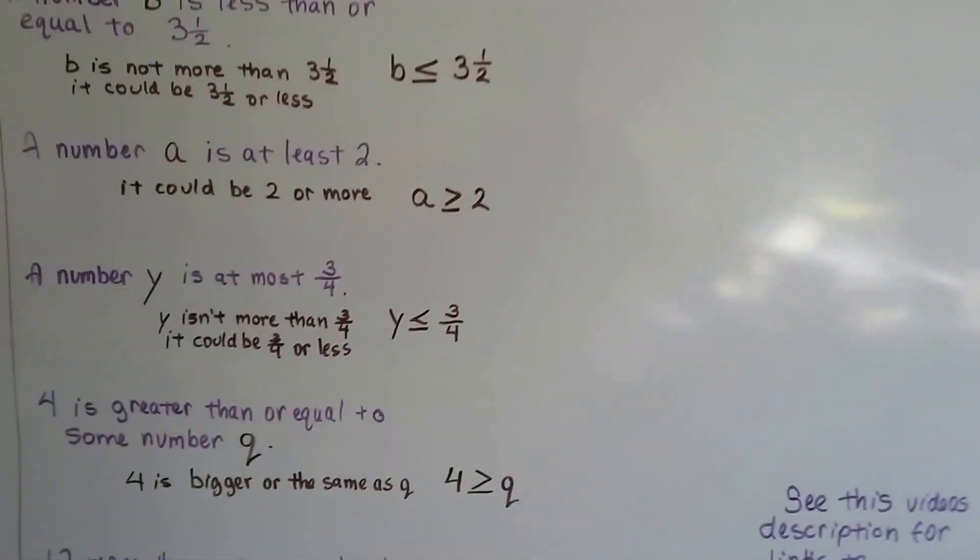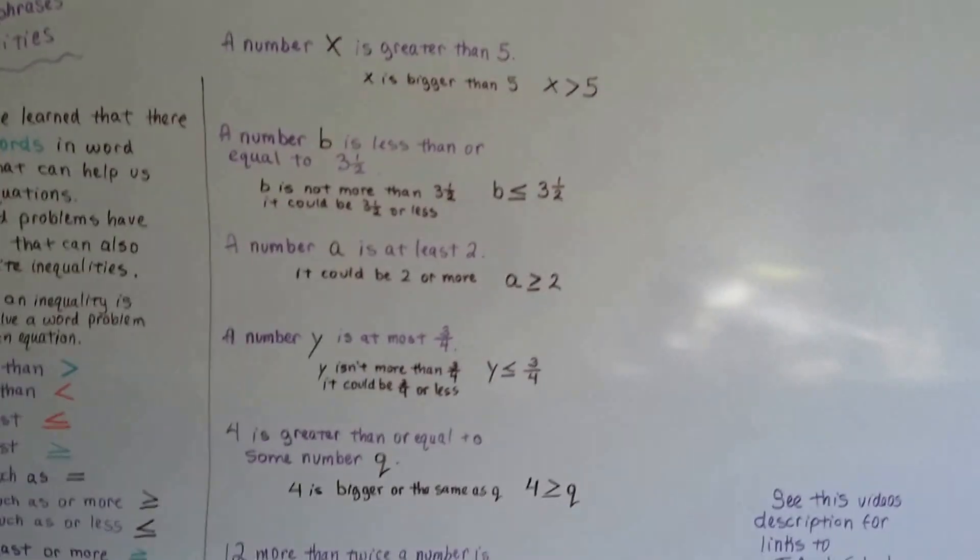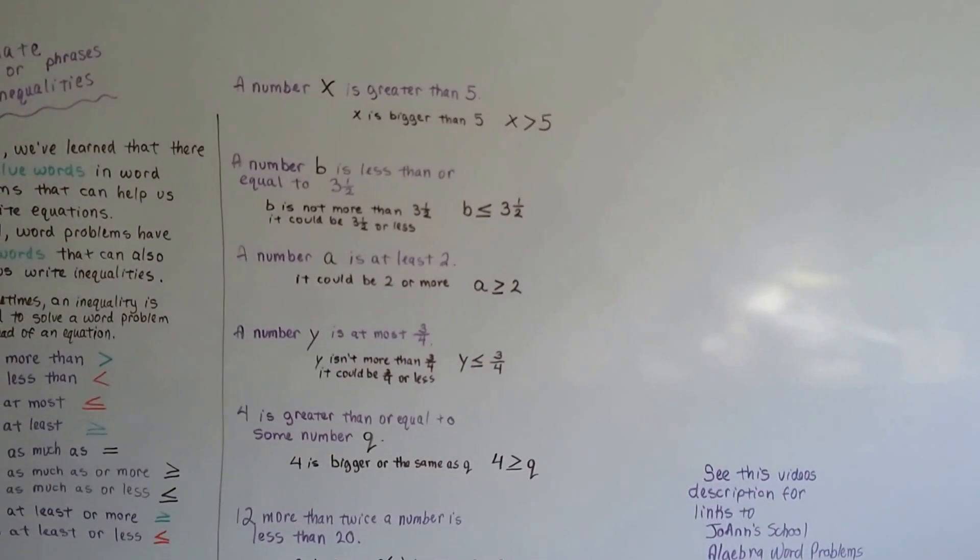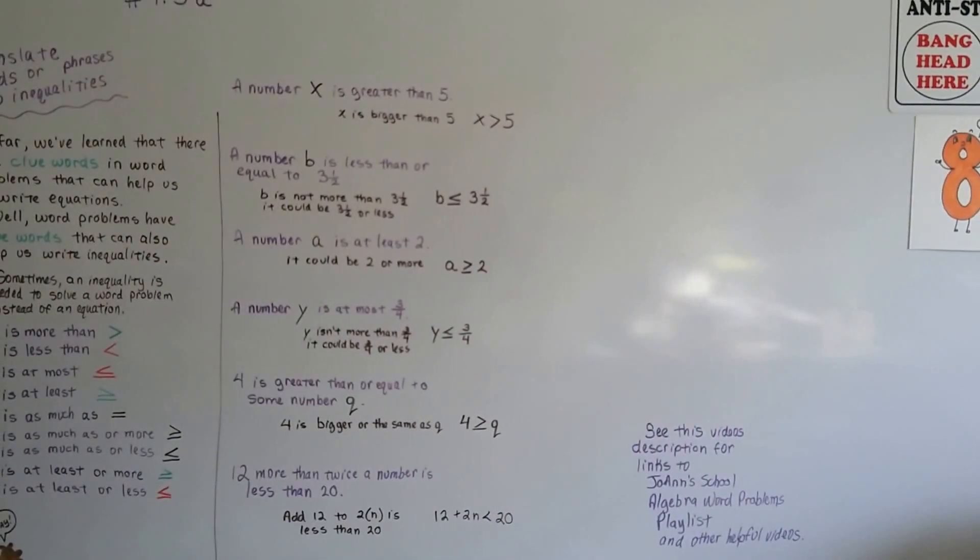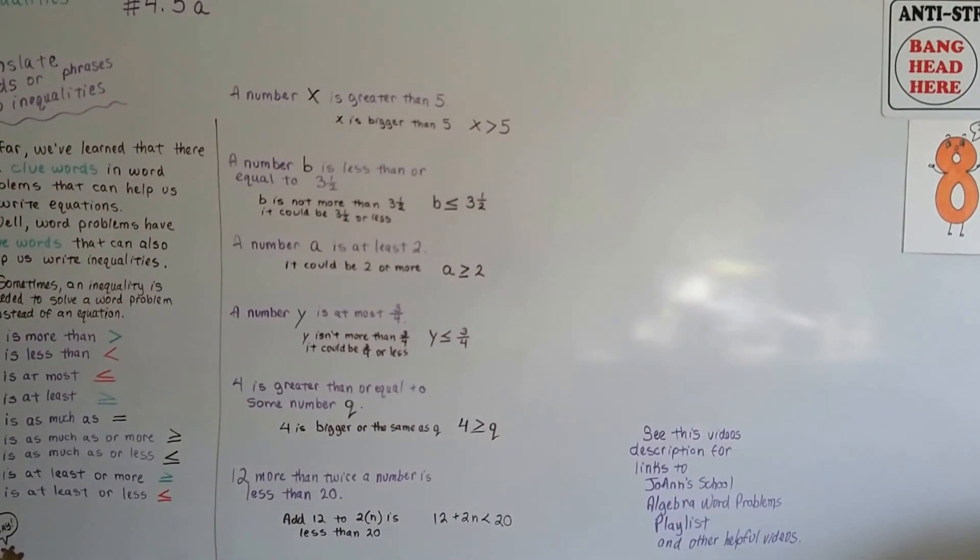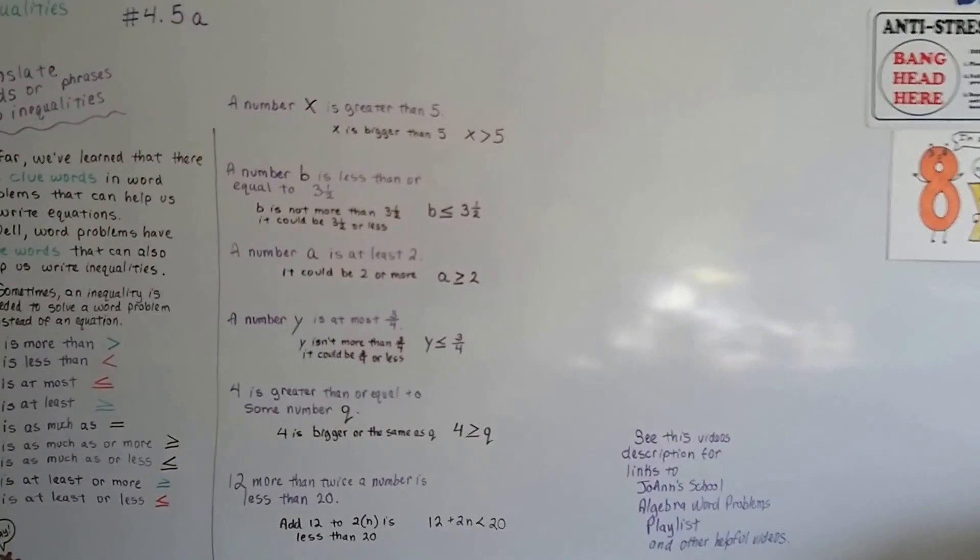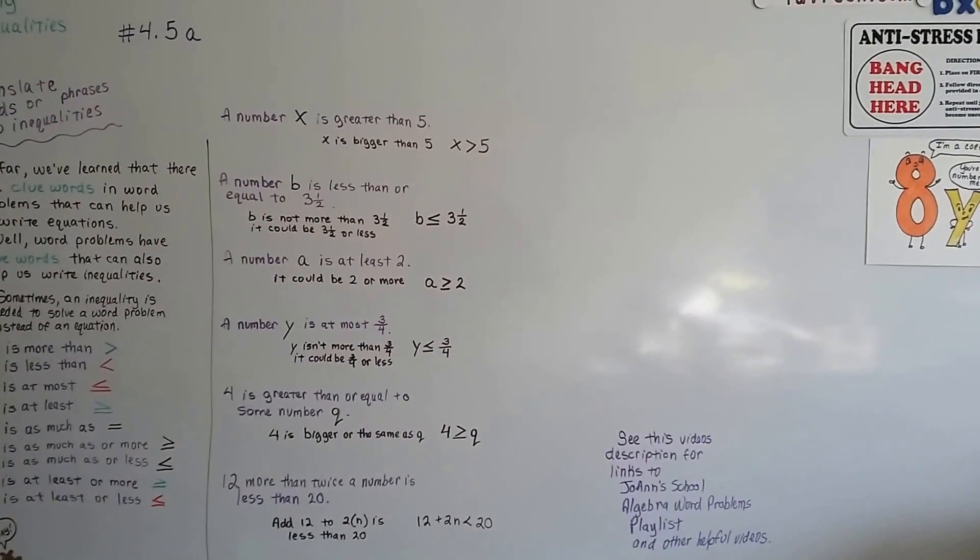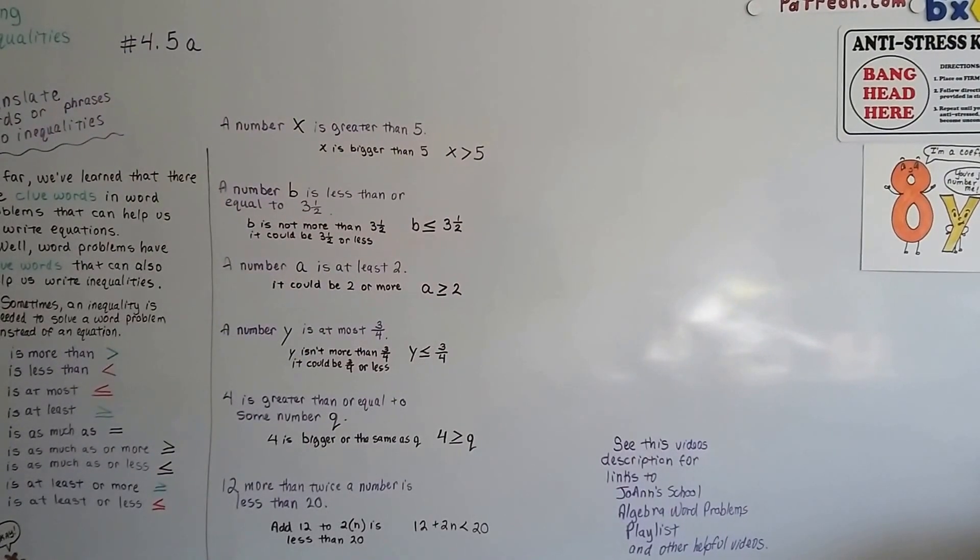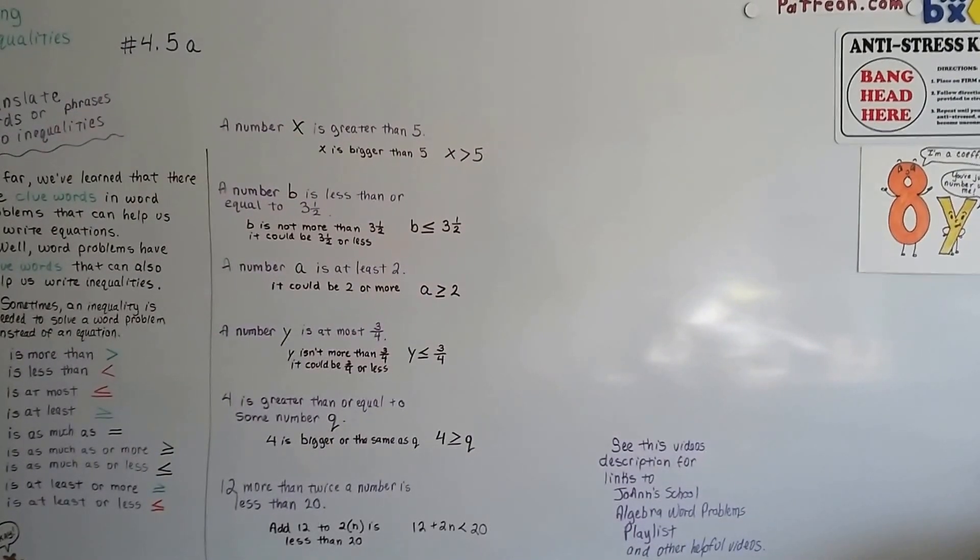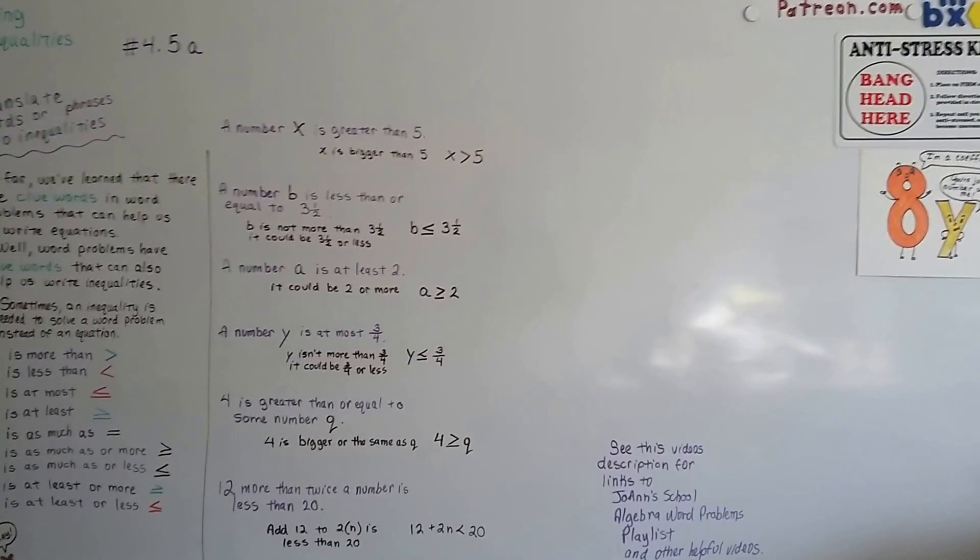So, we're going to actually do some example word problems in the next video that are pretty typical for inequalities from word problems. And hopefully, that'll be a good guide for you to see how to do this. We'll actually try some. That'll be 4.5b. I hope you're doing okay. Keep trying. You'll be okay. We'll do this together. Bye.